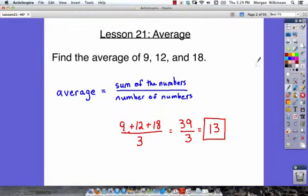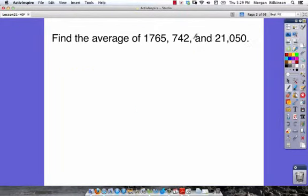Let's move on to our next example. We want to find the average of some bigger numbers. We have 1,765, 742, and 21,050. So the first thing we need to do is find the sum of those three numbers. So we're going to say 1,765, and we're going to add on 742 to that.